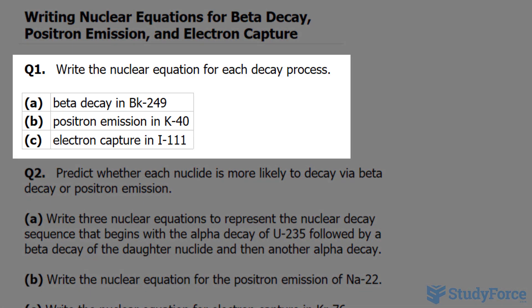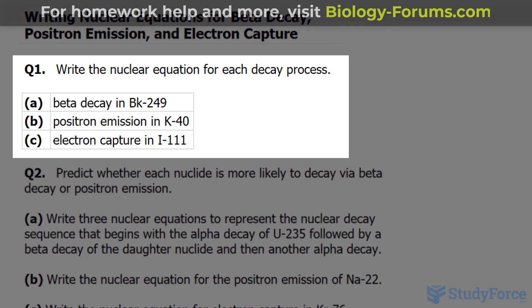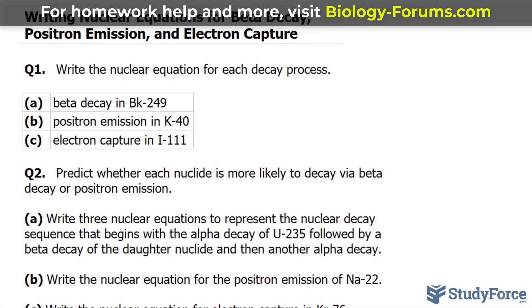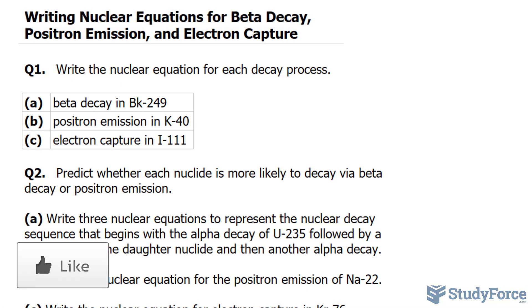Question 1 reads, write the nuclear equation for each decay process. For A, they want beta decay in the element Berkelium-249. During a beta decay, one of the neutrons in the nucleus suddenly changes into a proton, causing an increase in the atomic number of the element.